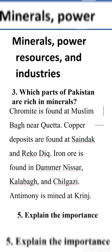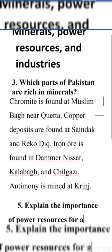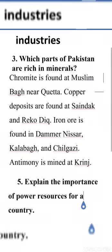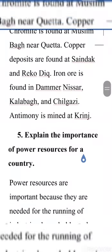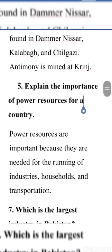Iron ore is found in Damir, Nissar, Kalabagh, and Chilghazi. Antimony is mined at Khyber. لوہے کا خام مال Damir، Nissar، Kalabagh اور Chilghazi کے مقام پر موجود ہے، اور Antimony کی کانیں Khyber کے مقام پر ہیں۔